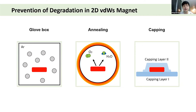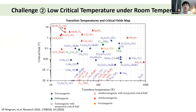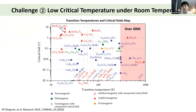The second challenge is that 2D magnets have a very low critical temperature. Looking at a critical temperature and coercivity field map, for real device use these materials must maintain their magnetic properties beyond room temperature. Checking which materials show magnetic properties above room temperature, there are very few, and at the monolayer level there is only one — vanadium diselenide — that shows magnetic properties above 300 Kelvin. This is a very serious problem.